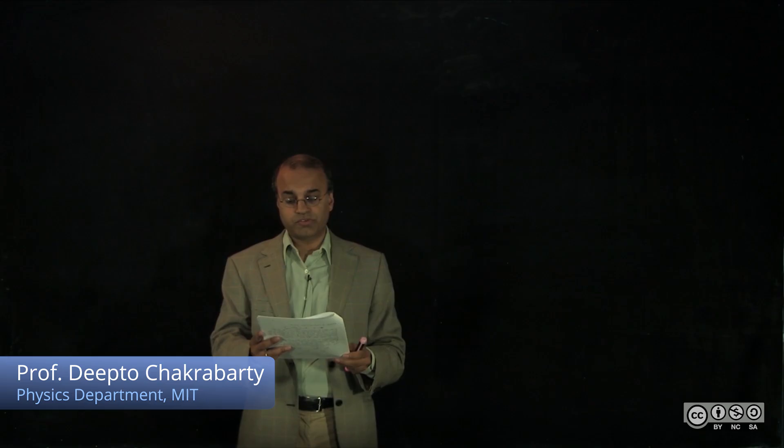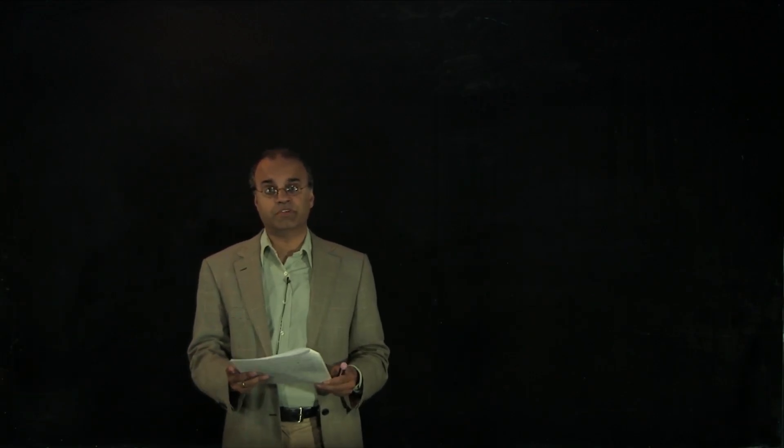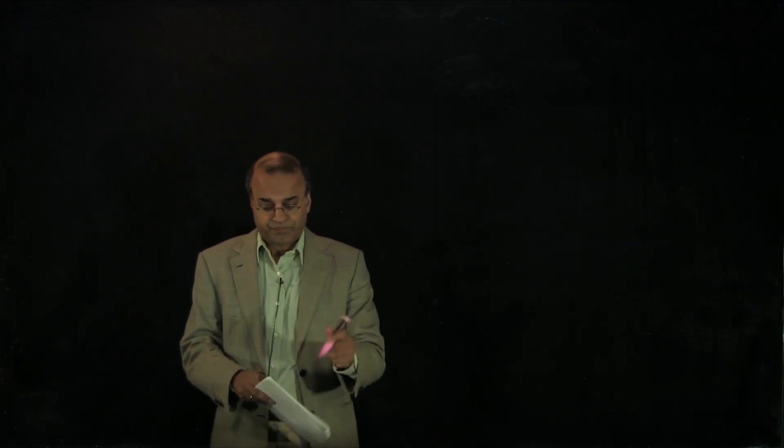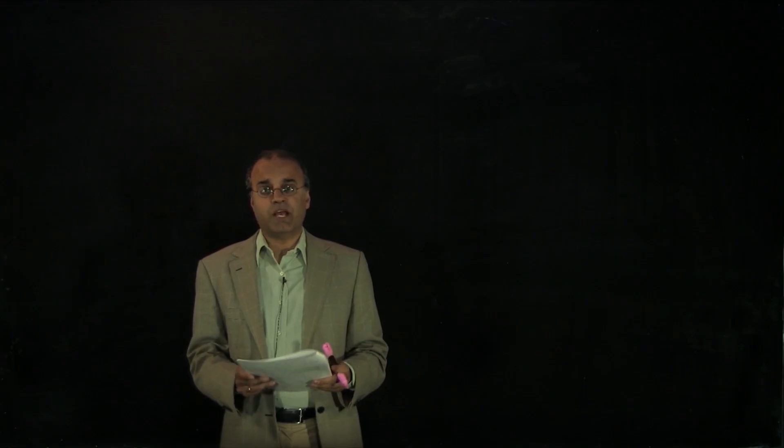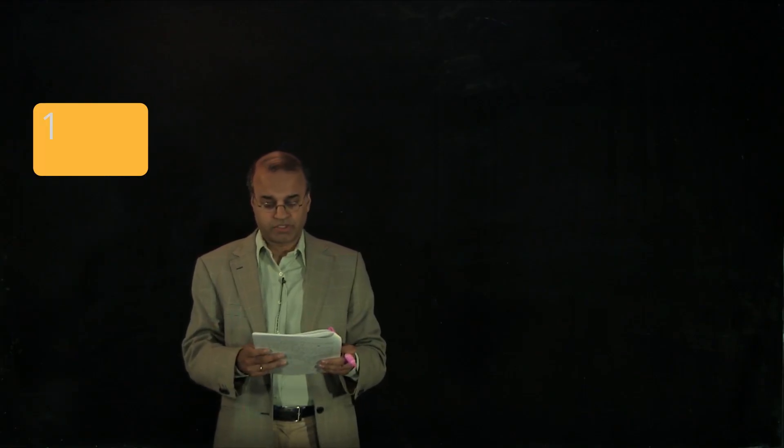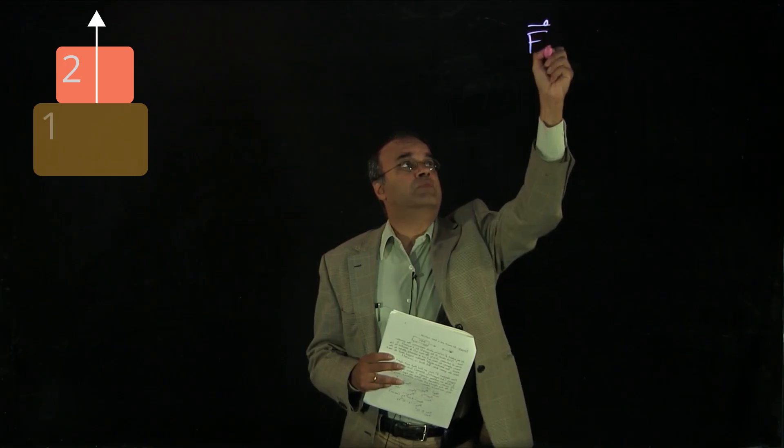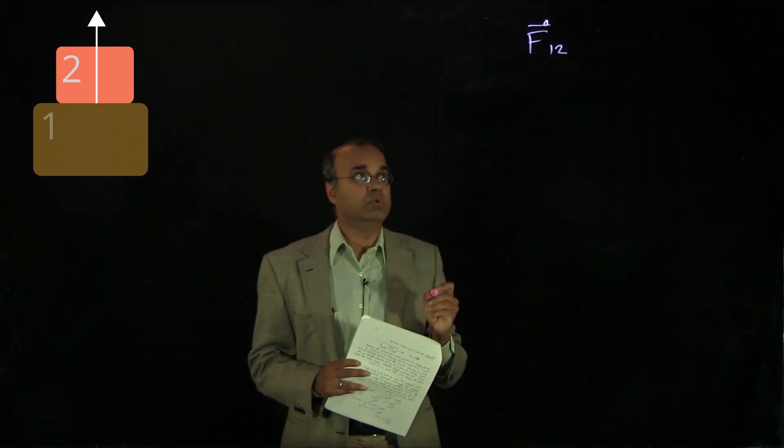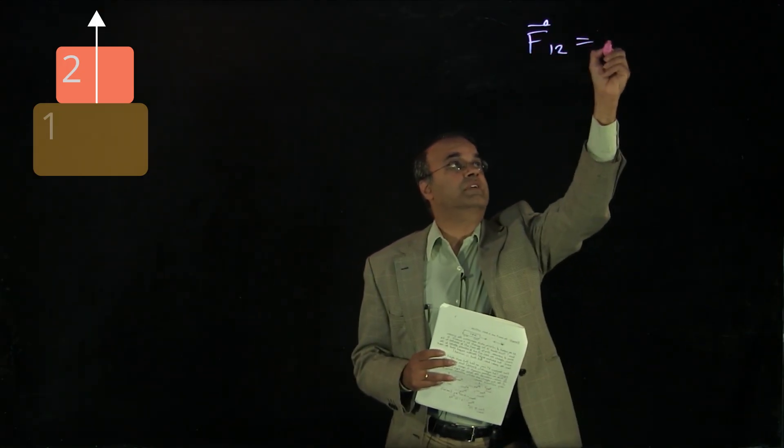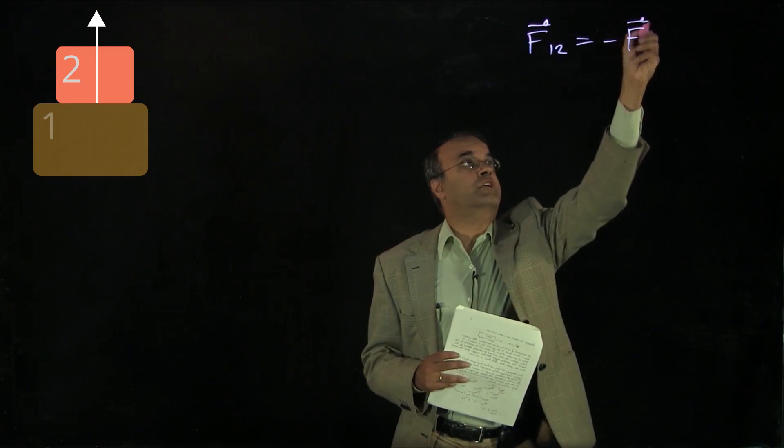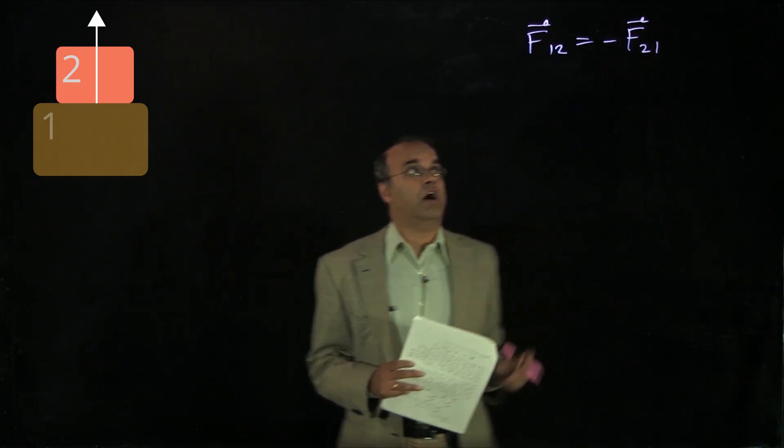Newton's third law states that forces always come in equal and opposite pairs. One way we can write that is if you imagine two objects, object 1 and object 2, the force exerted by object 1 on object 2 is equal and opposite to the force exerted by object 2 on object 1.